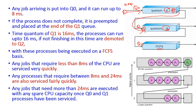If the process burst time is greater than 24 milliseconds, that process will be preempted and placed at the end of Q2, where the first come first serve scheduling algorithm is implemented.